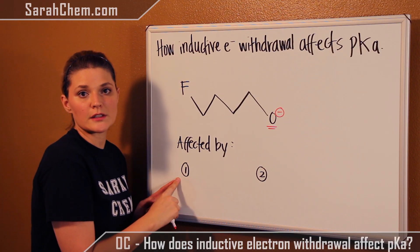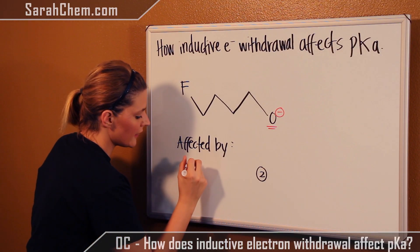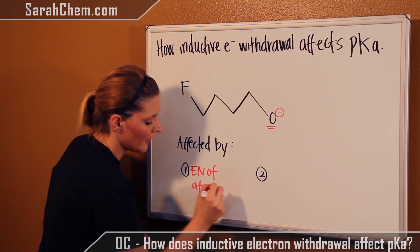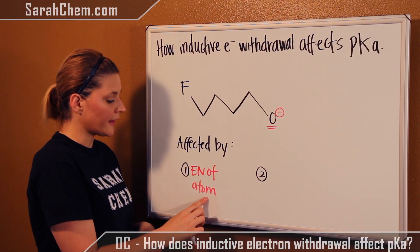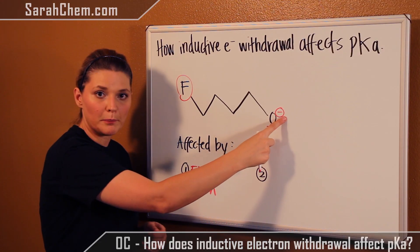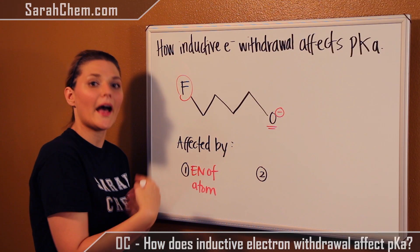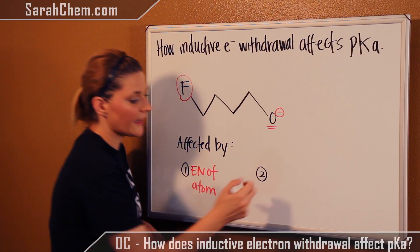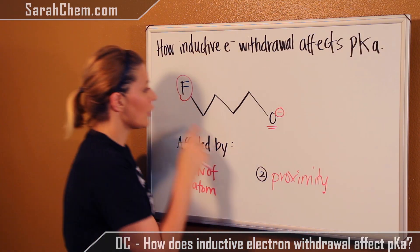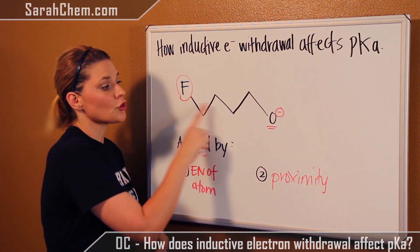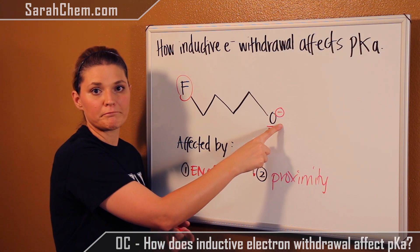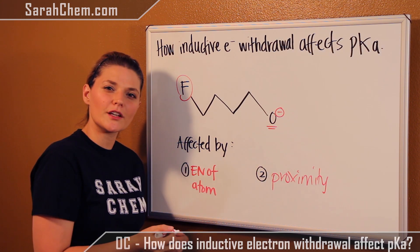When we're looking at inductive electron withdrawal, there are two things that affect it. The first is the electronegativity of the atom — in this case, we're talking about the electronegativity of the atom that does not bear the charge but would help bear the charge. The second thing is proximity: the closer this atom is to the atom that has the charge on it, the more stabilizing it will be. So let's take a look at a few examples.